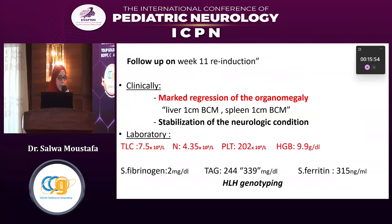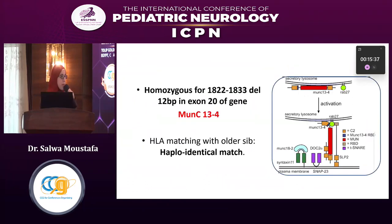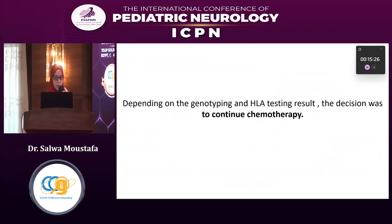At follow-up week 11, there was marked regression of organomegaly and stabilization of the neurological condition. Counts recovered with hemoglobin 9.9, though fibrinogen dropped again to 300 and was subsequently increased. HLH genotyping was performed, revealing a positive homozygous mutation for MUNX-13. HLA matching with an older sibling showed an identical match.